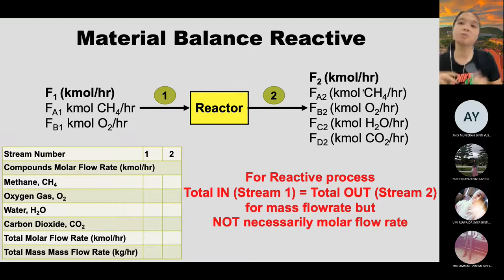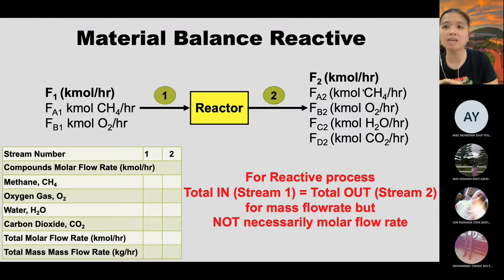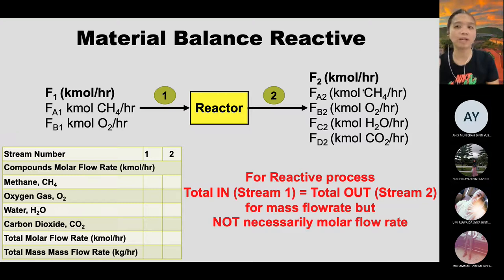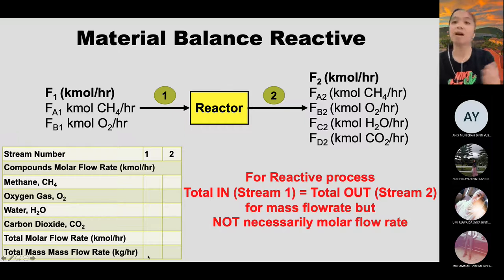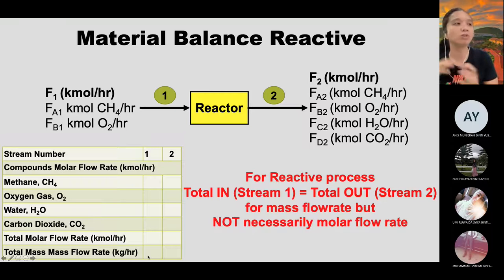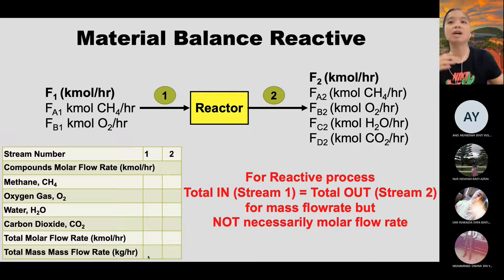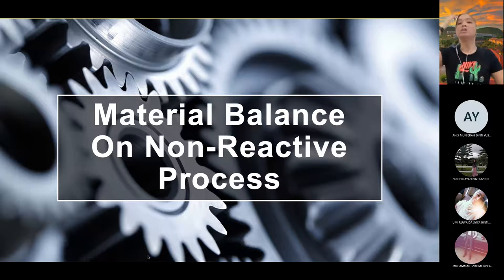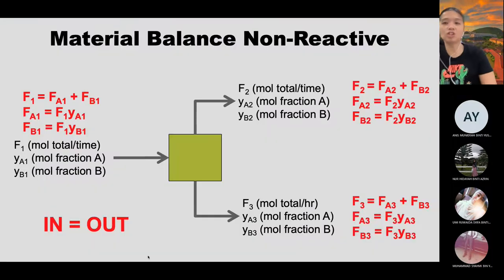That's why I always include mass flow rate in the table — it's the way to check whether the calculation is correct. For reactive processes, when you calculate using molar flow rate and the totals don't match, that's okay. But when you convert to mass flow rate, the totals must be equal. If mass totals are equal, your calculation is correct; if not, there's an error.